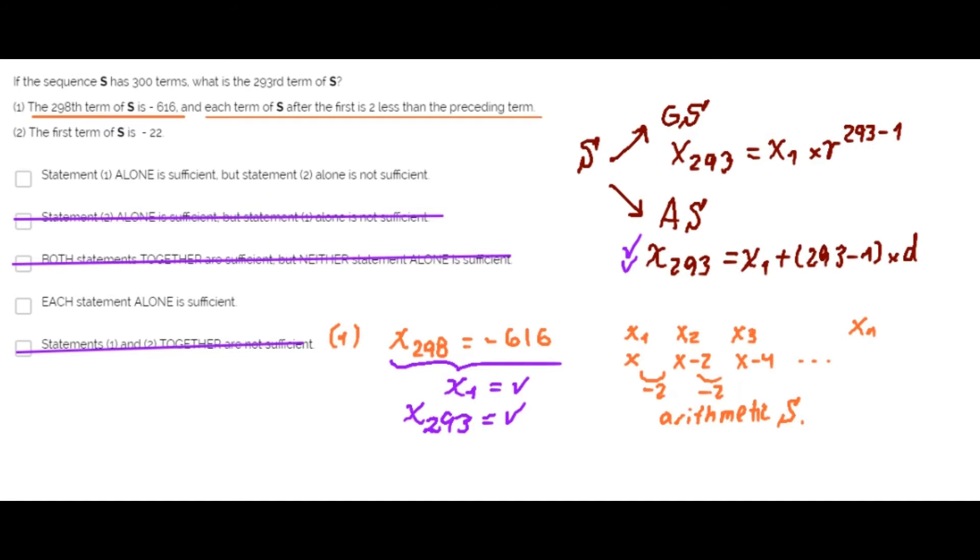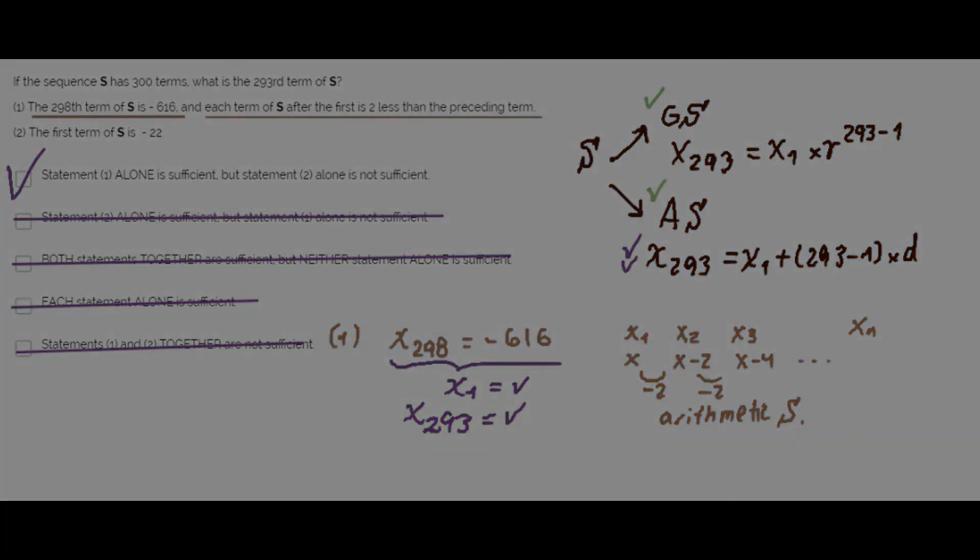Statement 2 alone says the first term of S is negative 22. But we don't know whether sequence S is geometric or arithmetic, so we don't know which formula to use. There is also missing information. Therefore, statement 2 alone is not sufficient. Choice D is discarded, choice A is correct.